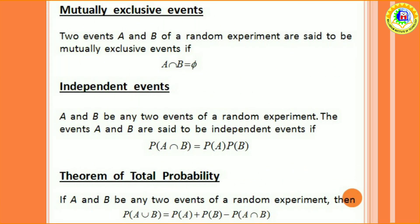What is independent events? A and B be any two events of a random experiment. The events A and B are said to be independent events if probability of A intersection B equal to probability of A into probability of B.